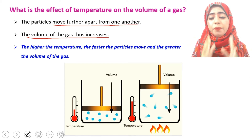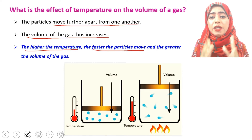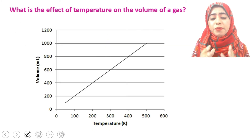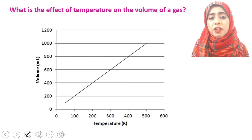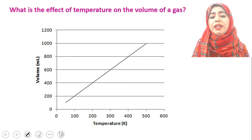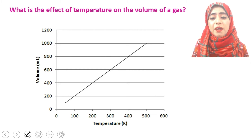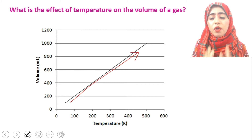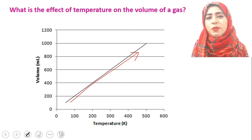So we can see that the higher the temperature, the faster will be the movement of particles, and they will have a greater volume. If we make a graph between volume and temperature, it will be a direct relation — by increasing the temperature, the volume of the gas will start increasing. So volume and temperature of the gas are directly proportional to each other.